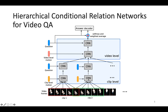At the clip level, the CIN encodes the relation between frame appearance and integrates with clip motion and linguistic features. At the video level, they capture the relation between clip encodings and integrate with video-level motion and linguistic features as context respectively. It is also capable to go deeper in hierarchy to deal with long videos.